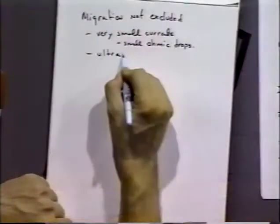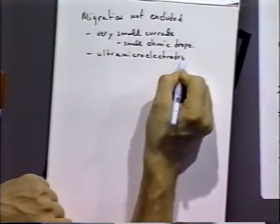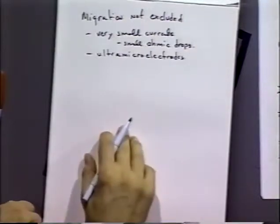And these are usually done using what they call ultra microelectrodes, which we'll talk about later. And they are very small electrodes that allow us to do these sorts of things.